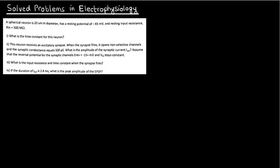So let's start with a really easy problem, and believe me, as you go on in the course, the problems only get tougher, so be prepared. So you have a spherical neuron that's 20 microns in diameter — something like this ball that I've drawn here.